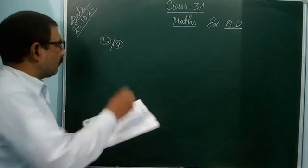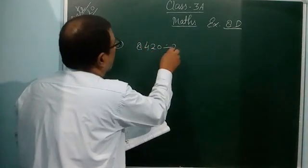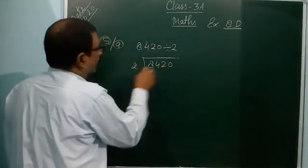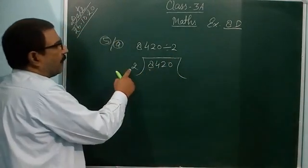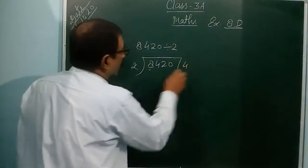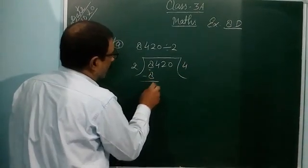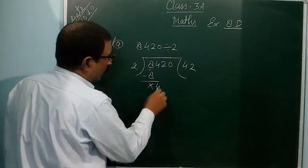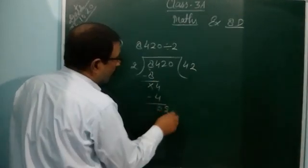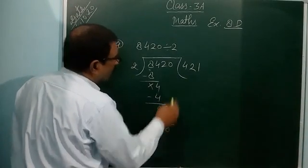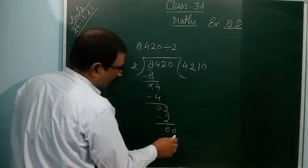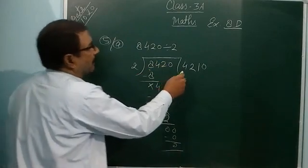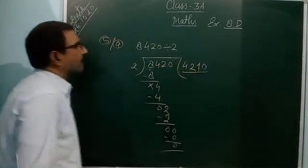Question 5a: 8420 divided by 2. The simple way to divide 8420 by 2 — see, 8 is in the table of 2: 2×4=8, so 8 minus 8 is 0. Then 4 divided by 2 is 2, 4 minus 4 is 0. Then 2 divided by 2 is 1, 2 minus 2 is 0. Then 0 divided by 2 is 0. So the result — the quotient — is 4210.